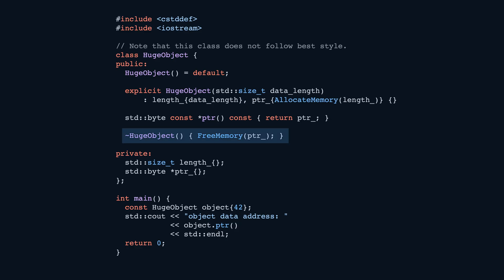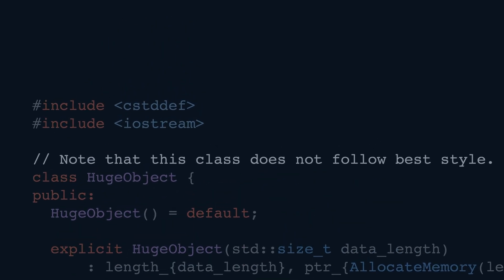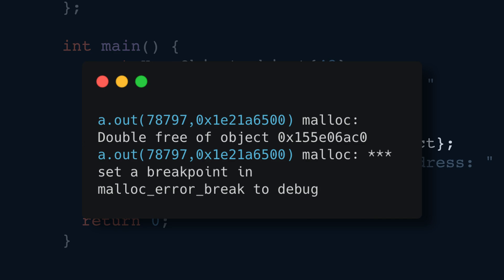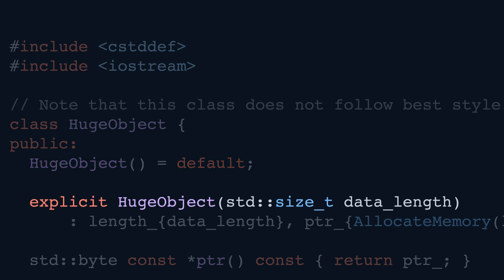Note that even with this destructor in place, we still must explicitly state that this class does not follow best practices yet — let's figure out why. If we introduce another object of the HugeObject type and initialize it as a copy of our existing object, the code will compile but will crash when we run it. Why does it even compile in the first place? There is no constructor for HugeObject that takes another instance of HugeObject, and yet it still compiles. So what's going on here?